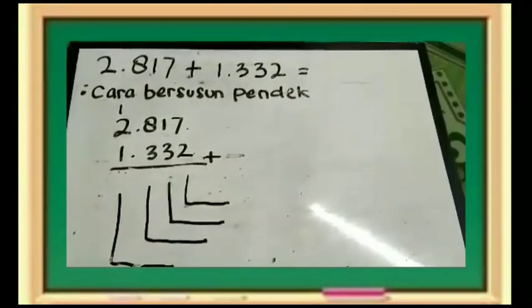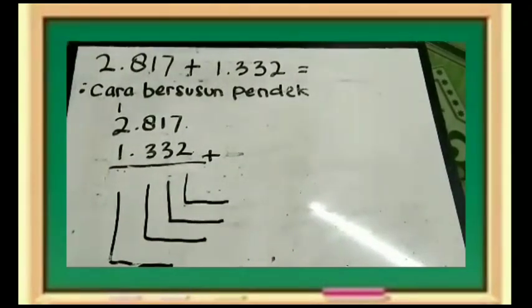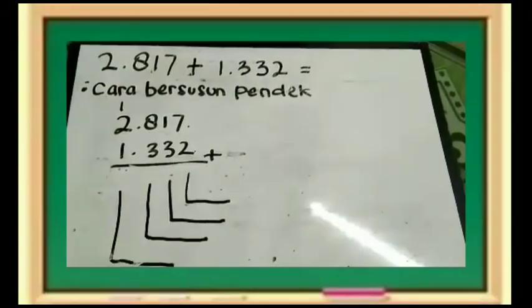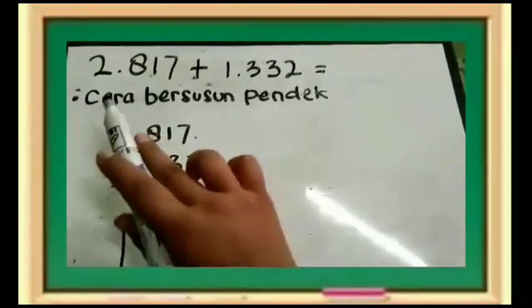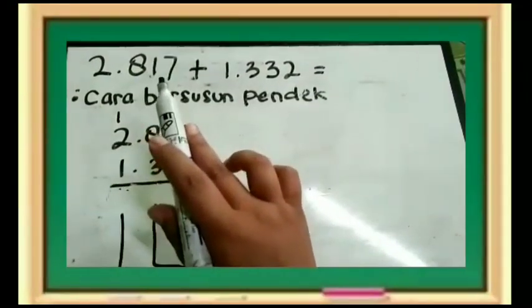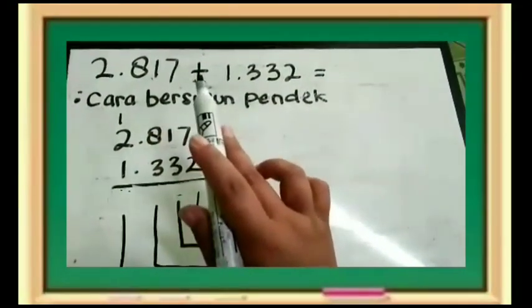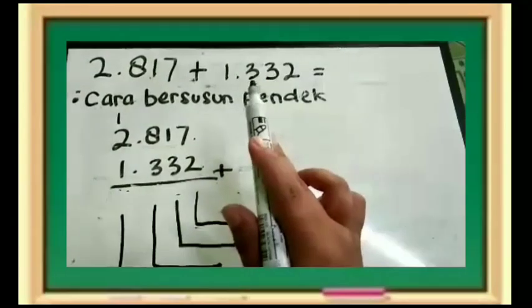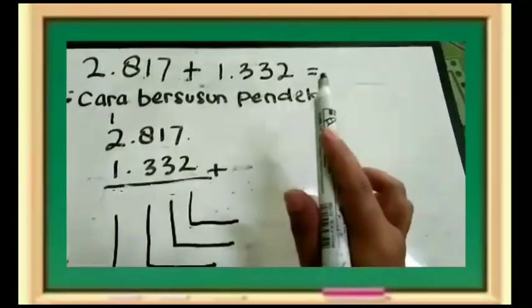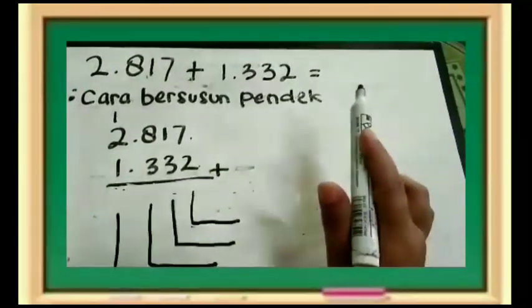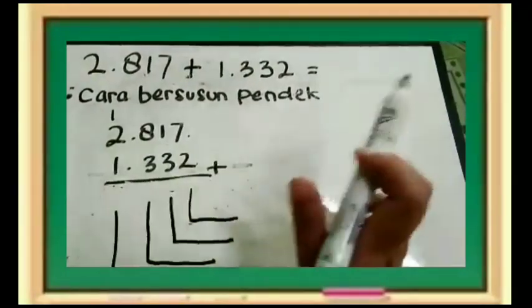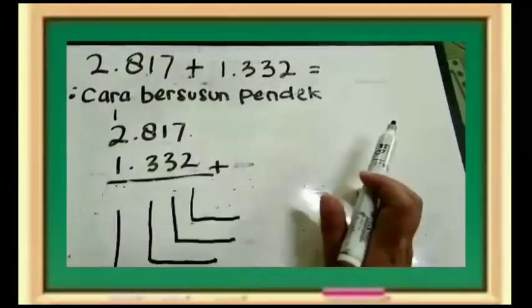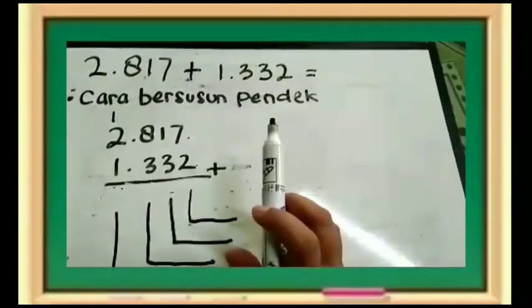Bismillahirrohmanirrohim. Kita mulai pembelajarannya. Dari angka di sini yaitu 2817 ditambah 1332 sama dengan berapa? Kita gunakan dengan cara bersusun pendek dengan teknik menyimpan.